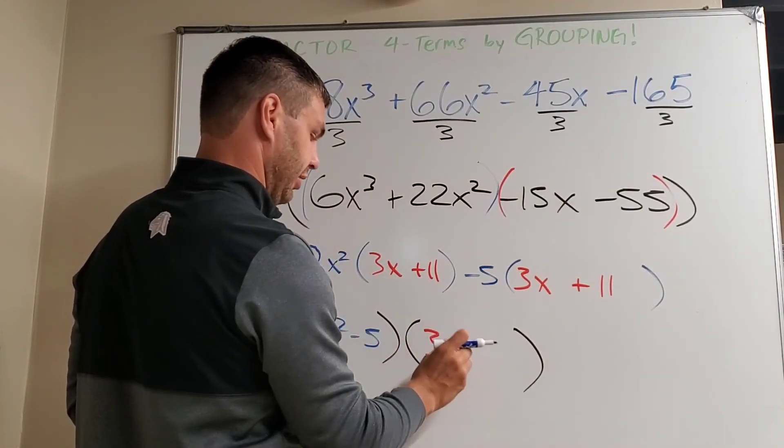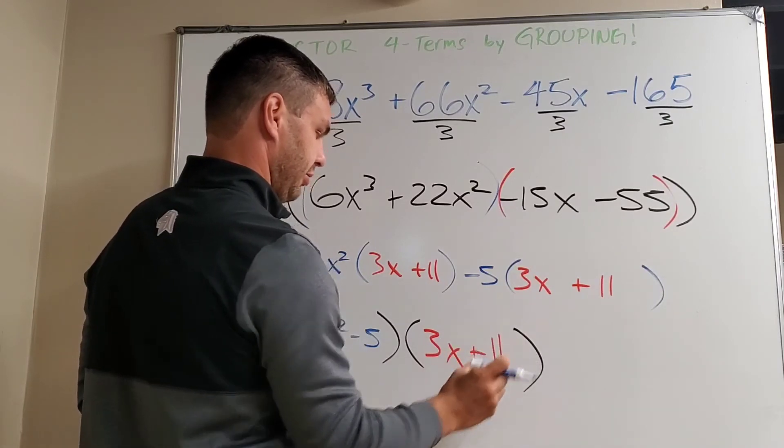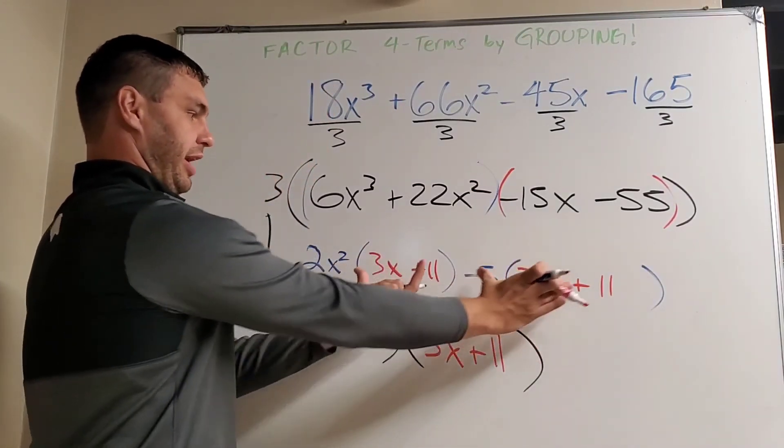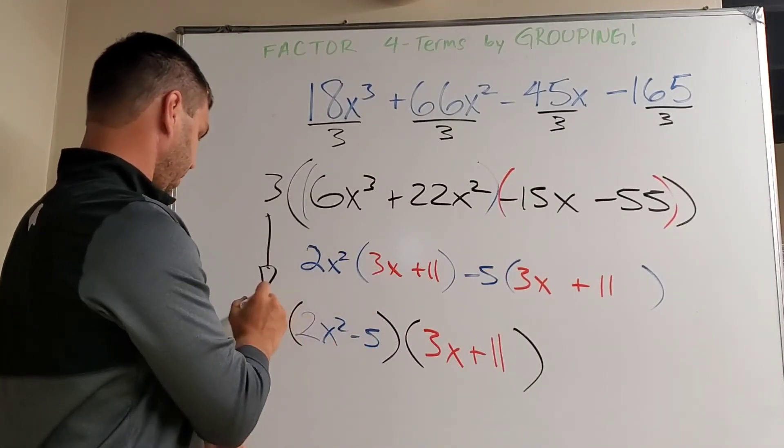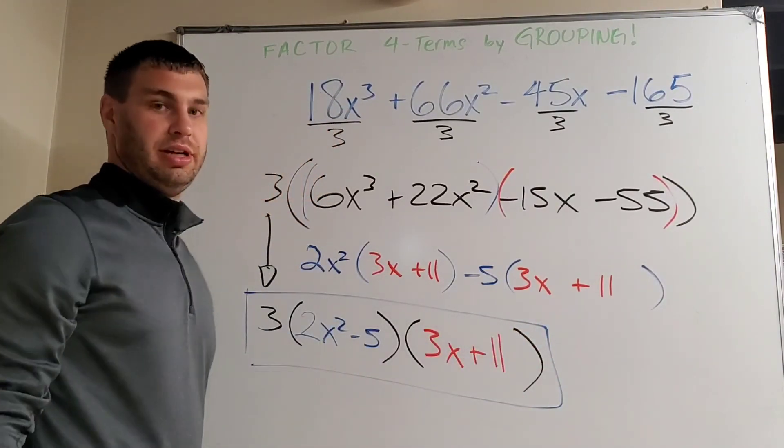And then 3x plus 11, the red group, you'd write just one of those. I know there's 2, but you're just going to write one of those because what you're really doing is you're factoring out a 3x plus 11 again. It's kind of like you're factoring one more time. So all of that together is your answer.